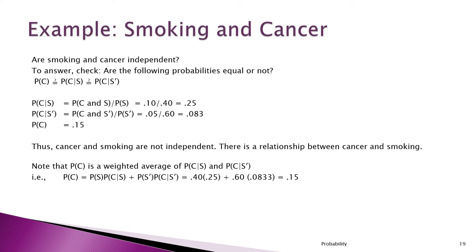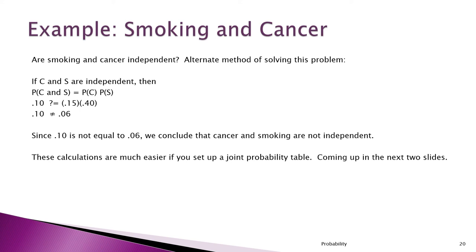Here's another way to determine that cancer and smoking are not independent. If they were independent, P(C and S) should equal P(C) times P(S). We know P(C and S) is 0.10. Is that equal to 0.15 times 0.40? Well, 0.10 is not equal to 0.06, so we conclude that cancer and smoking are not independent.